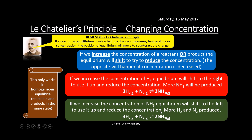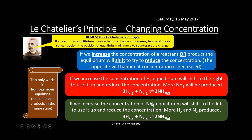If we increase the concentration of ammonia, equilibrium shifts to the left to try and reduce it, effectively breaking down ammonia into hydrogen and nitrogen, so we get more of those reactants.